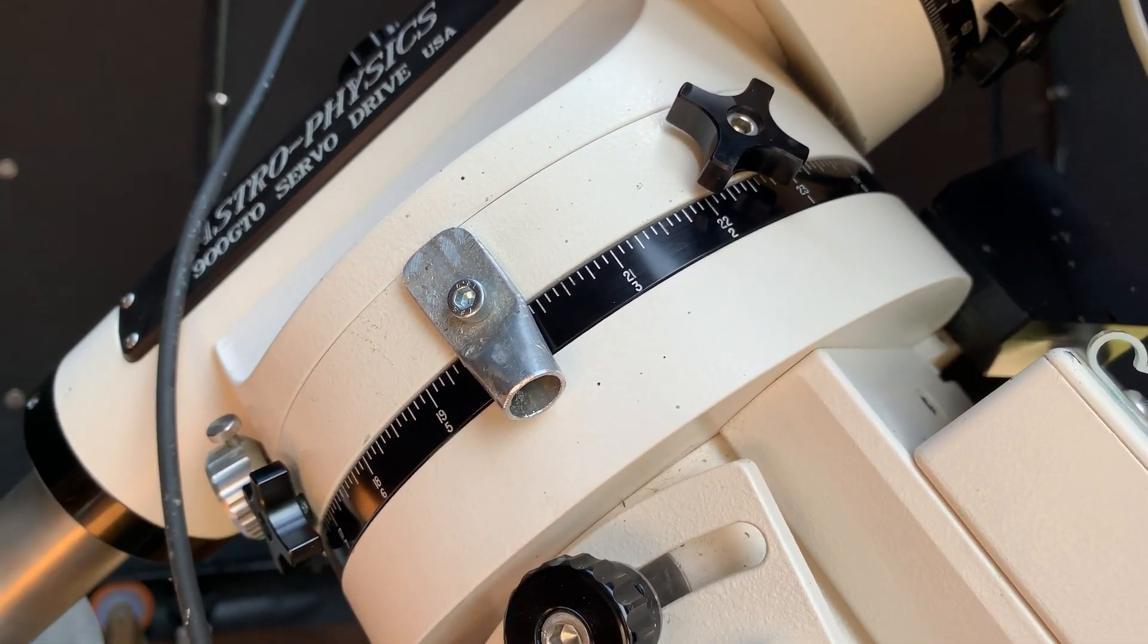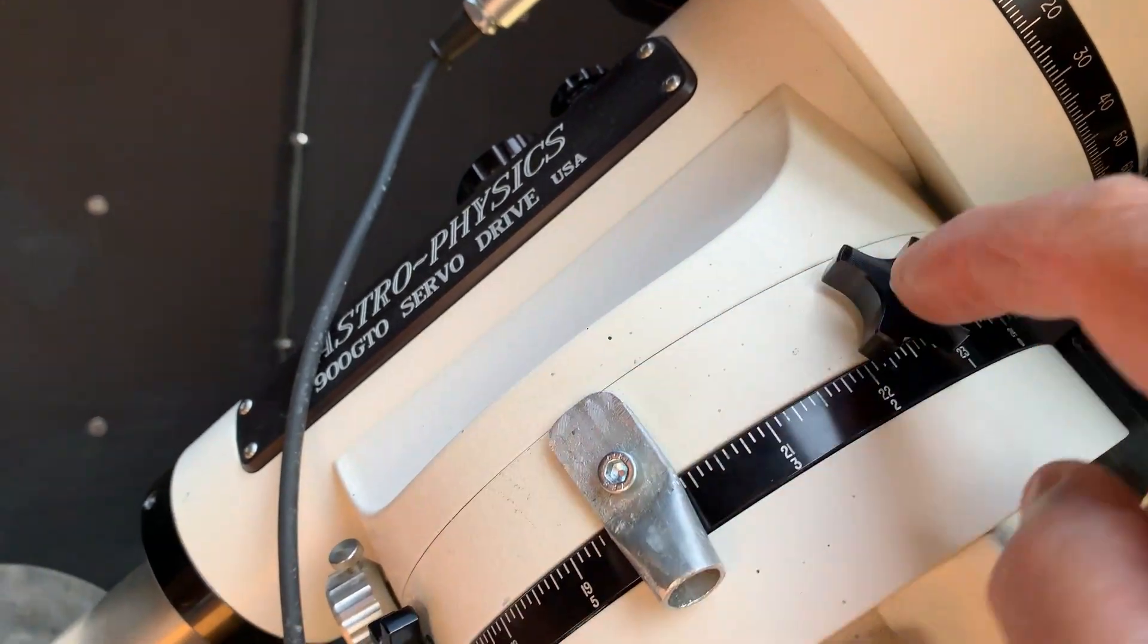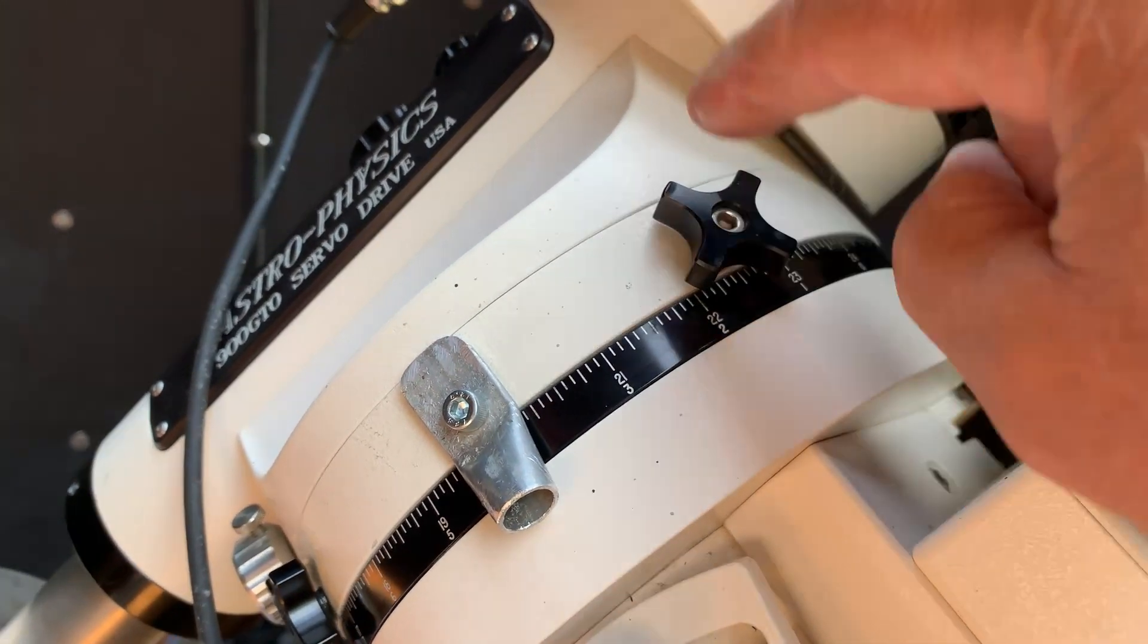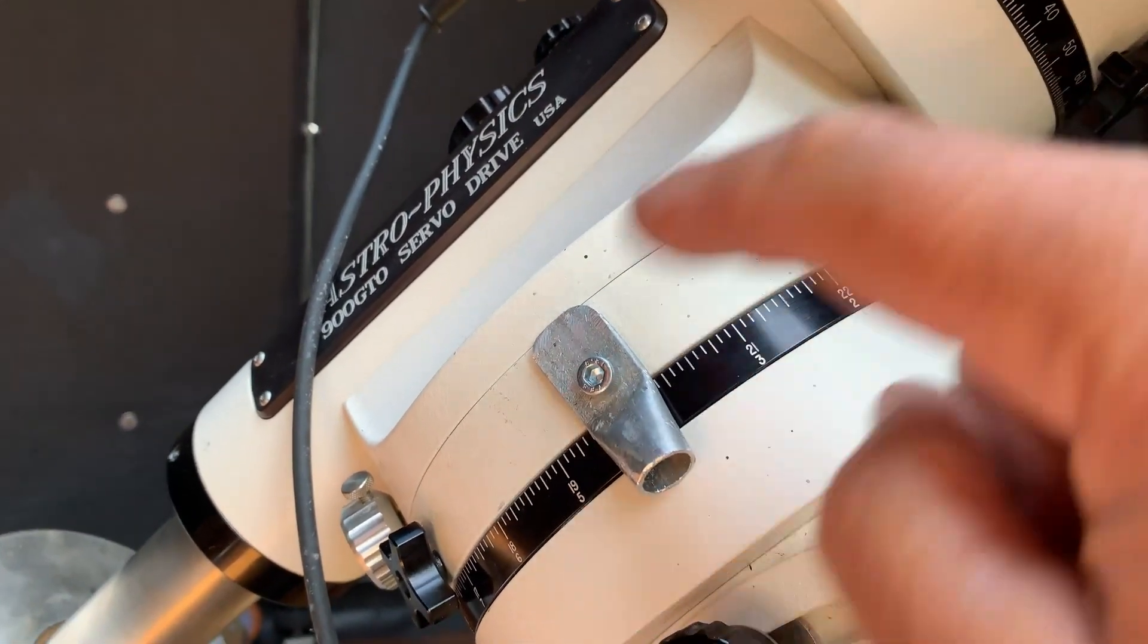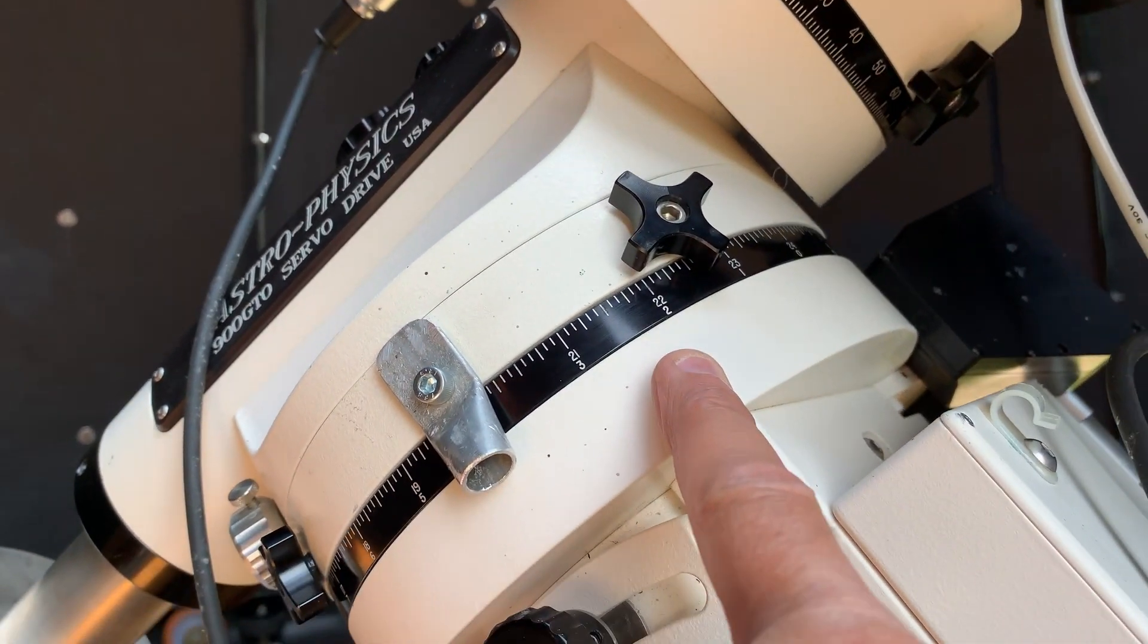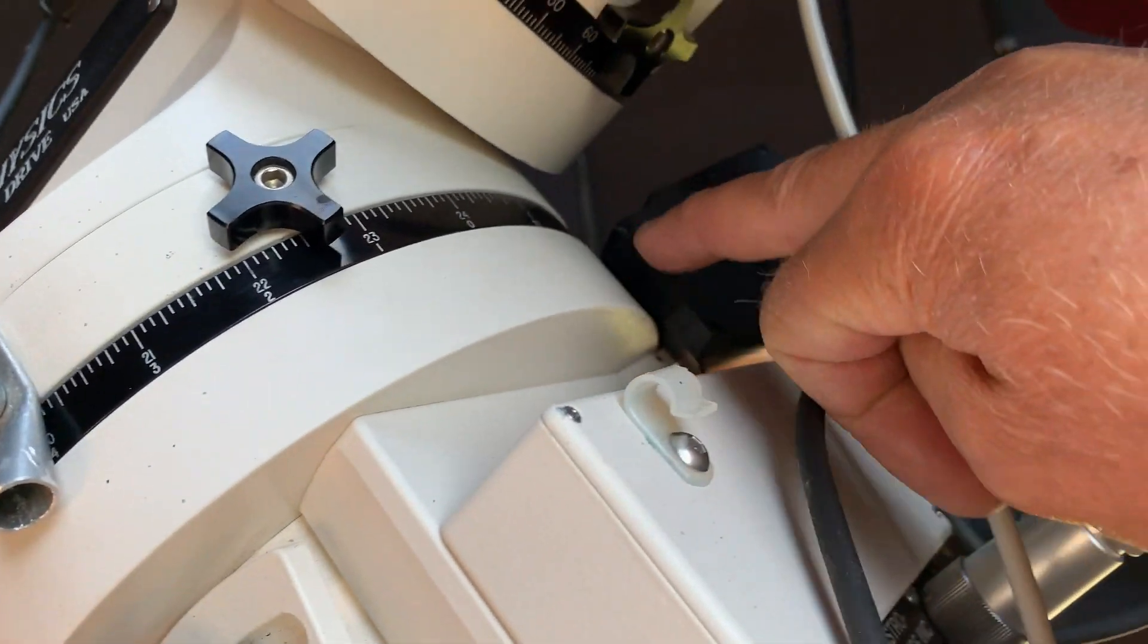What I did was I made this rather beautiful, I'm sure you'll agree, Heath Robinson item from squashing a piece of aluminum tube and I tapped into the mount. I knew I was safe to tap into this part of the mount because these big threaded clutch screws, there's four of them, they go in as well.